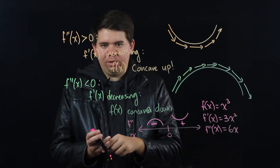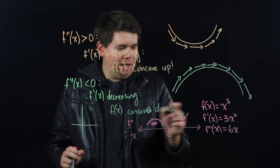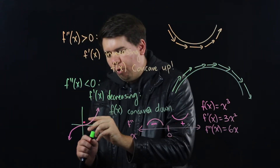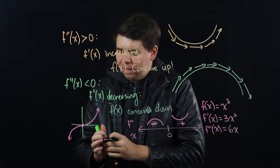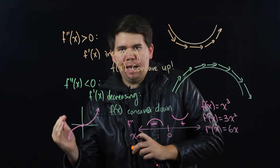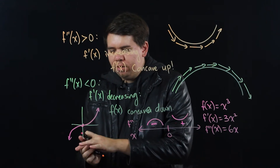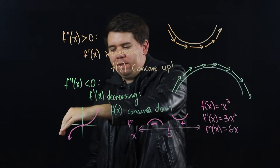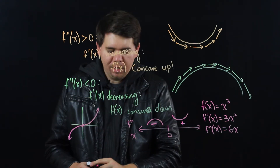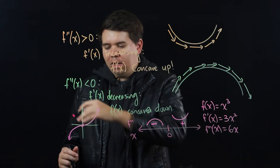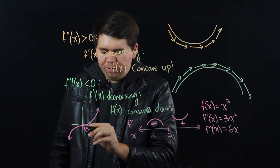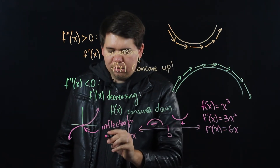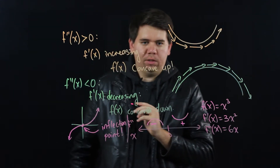Let's look at the graph of x³. Before zero, for all the negative x values, you can see it's concave down. But for all values bigger than zero, it's beginning to bend up — concave up. So it moves from concave down to concave up at zero. Since zero is the place where it changes concavity, we call that an inflection point. An inflection point is a point where you change your concavity.